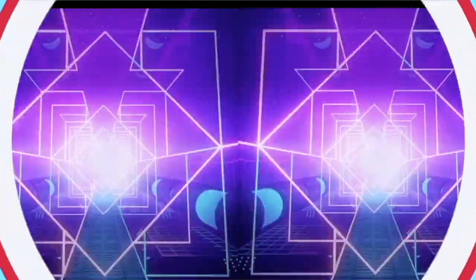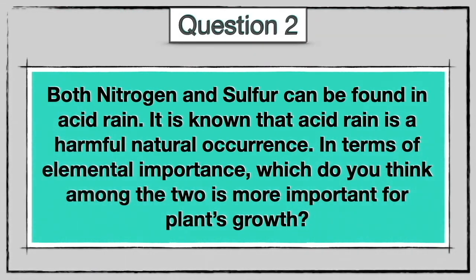Challengers, let's look at the second question. Both nitrogen and sulfur are elements that constitute acid rain. It is known that acid rain is a harmful natural occurrence. In terms of elemental importance, which do you think among the two is more important for plants' growth?